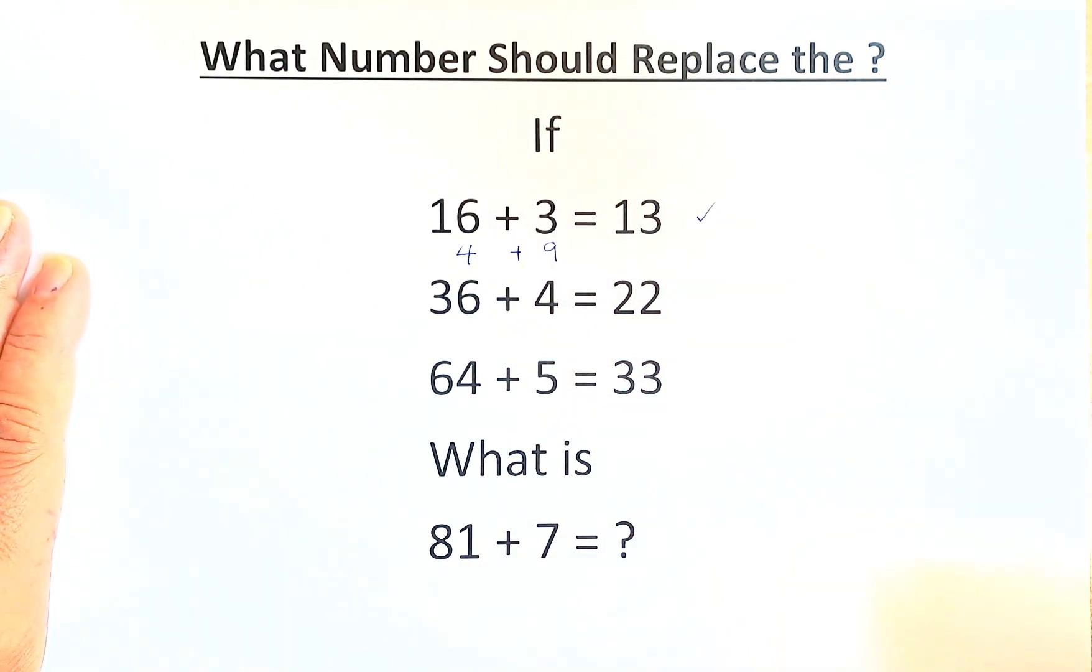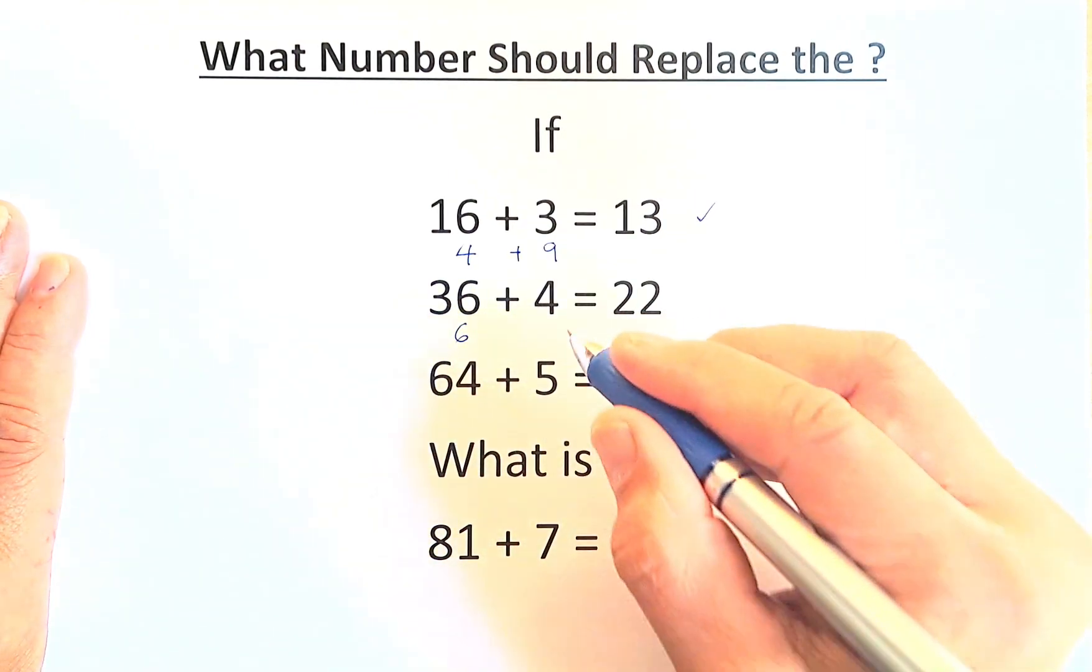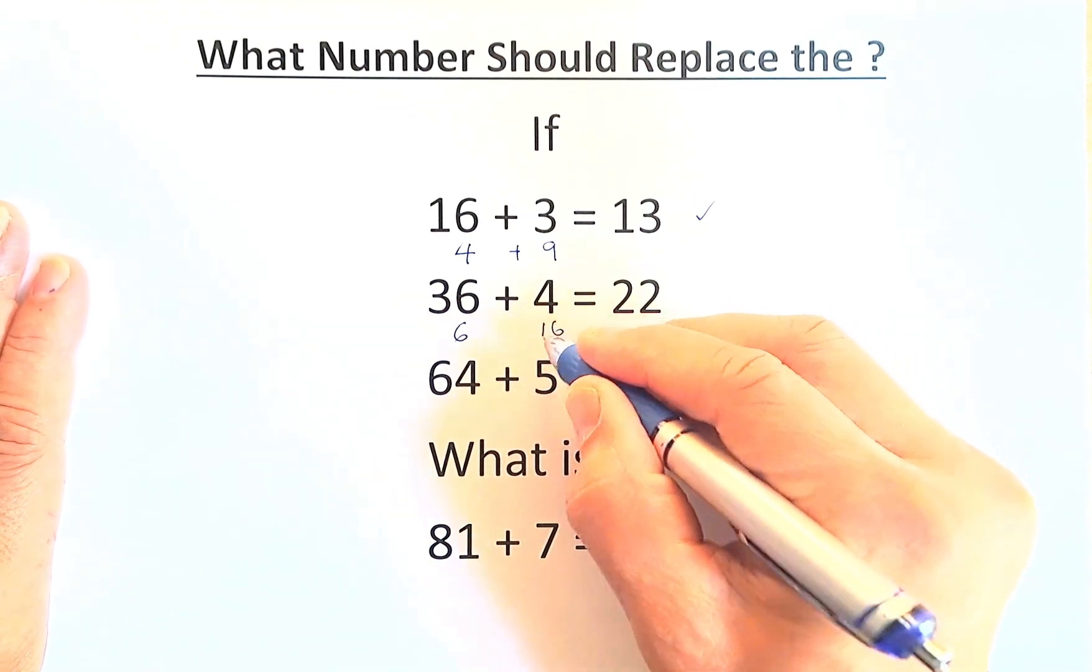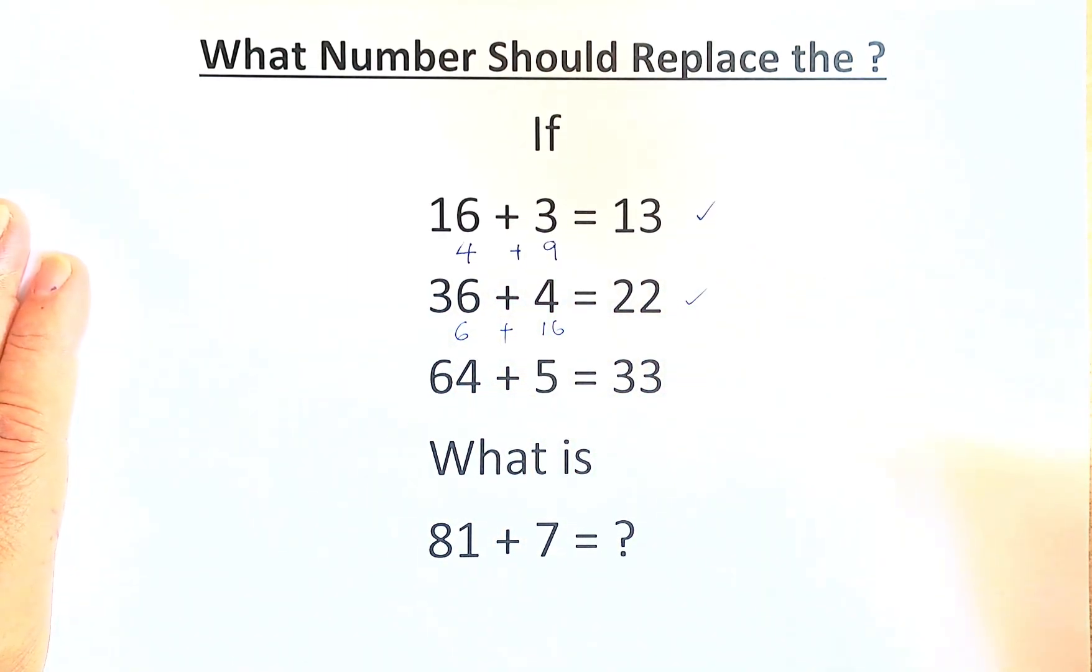Similarly, for the second row, when you square root 36, you've got 6. When you square 4, you get 16. So, 16 plus 6 is 22.